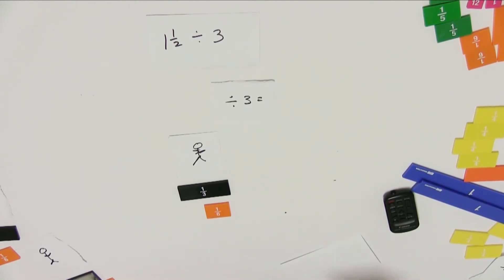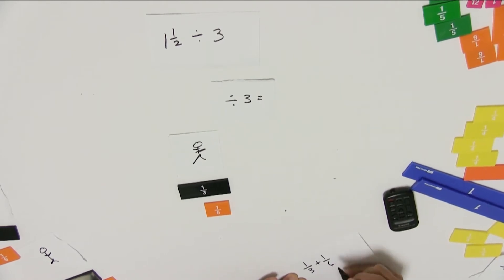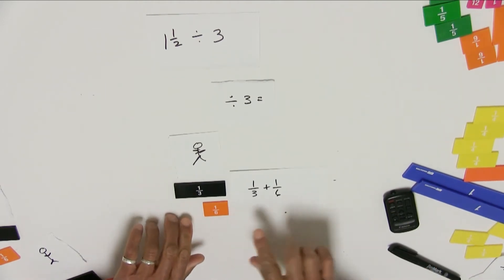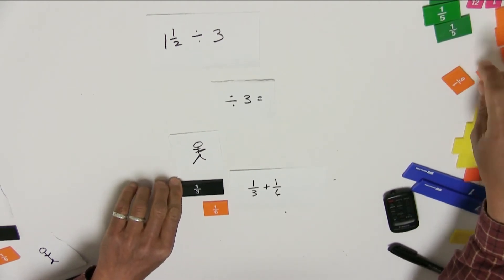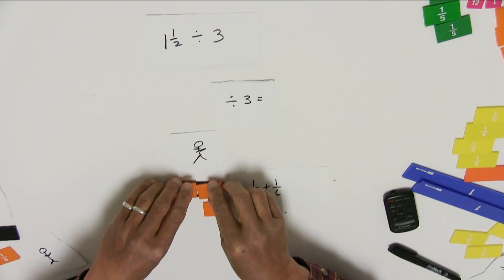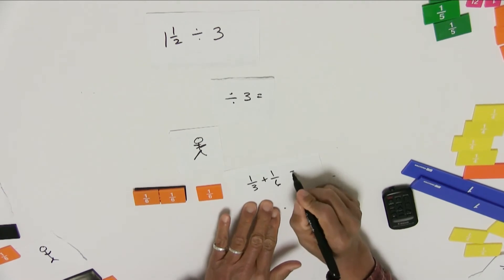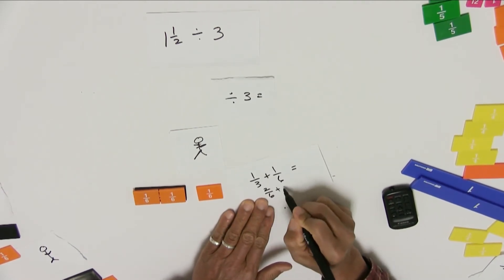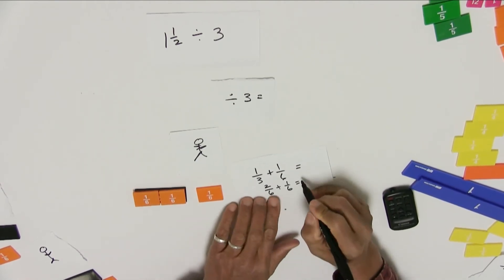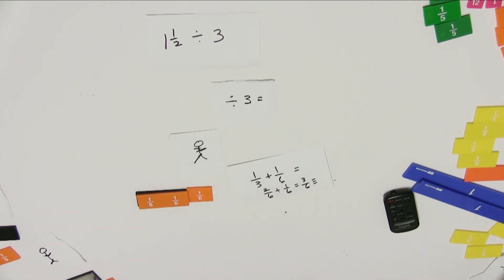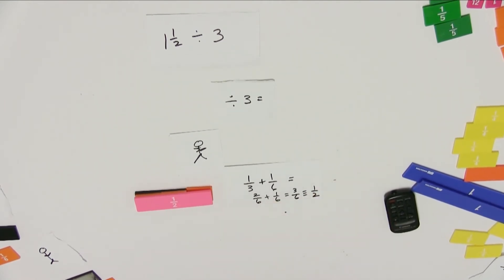My answer is 1 third and a sixth, but I need to simplify that answer. So I have to add these things together, and I can only add like units. I rewrite the problem: 2 sixths plus 1 sixth equals 3 sixths. 3 sixths is the same thing as 1 half. So there's my final answer.